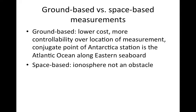Different measurements and data can be taken in different ways. A ground-based measurement is important because you have a lot of controllability over the location and don't have to consider changing anything while it's in the air. A problem arises when trying to look at other planets. Space-based measurement is really good for figuring out low-noise systems, which could be important depending on where you are in the solar system.